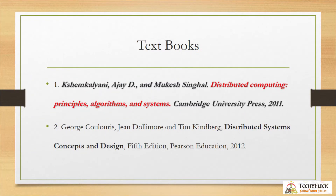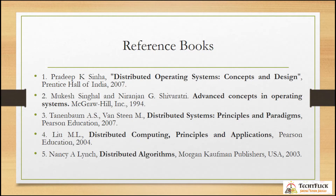There are two textbooks in the syllabus. We will study the first textbook, which covers all five units — this is a local author book. The first book is 'Distributed Computing: Principles, Algorithms and Systems.' Text book one is more than enough for the open book test. There are also five reference books, but text book one covers all the content needed.